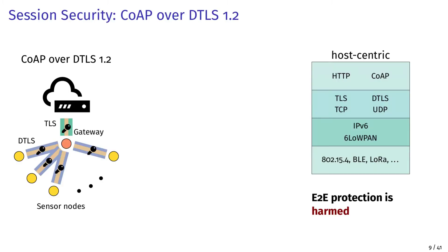Our first deployment option uses CoAP over DTLS 1.2. CoAP is a request-response application protocol like HTTP but was designed for the constrained IoT. The communication between IoT devices and the gateway is secured with the Datagram Transport Layer Security protocol, and the uplink to the cloud servers on the Internet side is secured with TLS. Since security channels terminate at the gateway, this deployment does not provide end-to-end protection.